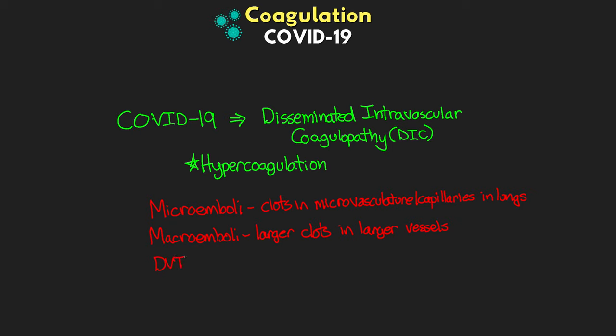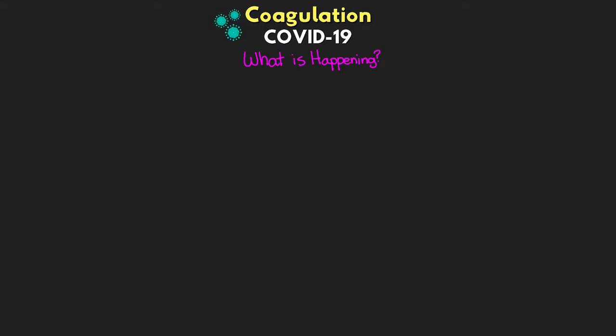In addition, we're seeing increased risk for DVTs, PEs, and even thrombotic strokes. This raises the question of what's actually happening in COVID-19 patients that's causing these issues. The cause is not entirely clear at this time, though it's probably multifactorial. There are many studies and ongoing research trying to better understand this topic.